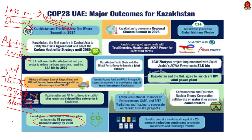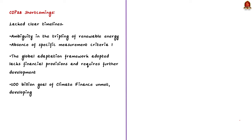The Global Cooling Pledge saw 66 national signatories commit to a 68% reduction in cooling-related emissions by 2050. On Climate Finance, UNCTAD estimates developed nations owe developing countries $500 billion in 2025 under the new collective quantified goal. The goal, starting at $100 billion annually, allocates $250 billion for mitigation, $100 billion for adaptation, and $150 billion for loss and damage. Shortcomings of COP28 include: lack of clear timelines for fossil fuel phase-out, ambiguity in tripling renewable energy capacity, no specific criteria for coal phase-down, and opposition to methane emission cuts — including India, which is not part of the Global Methane Pledge.